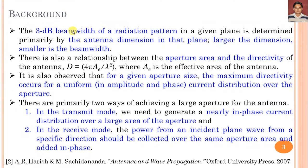The second important point is the 3 dB beam width of the radiation pattern in a given plane is determined primarily by the antenna dimension in that plane. Larger the dimension, smaller is the beam width — if the aperture dimension is very large, the beam width is very small. The aperture area and directivity hold the relation D = 4π·Ae/λ², where Ae is the effective area. For a given aperture size, maximum directivity occurs for a uniform amplitude and phase current distribution over the aperture.